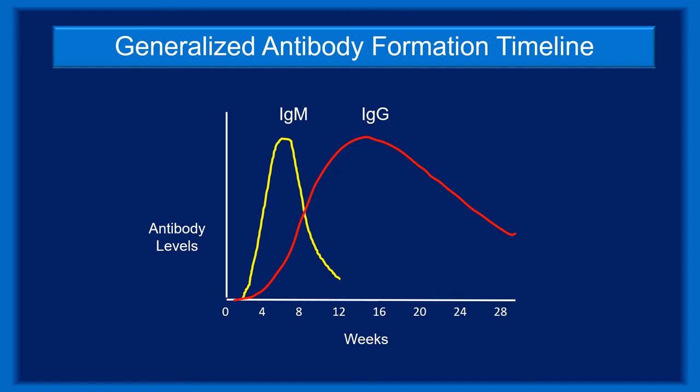IgM antibodies are the first to appear, typically beginning at two weeks, peaking around six weeks, and then rapidly disappearing. IgG antibodies have a slower startup and peak later. IgG levels may be measurable for prolonged periods, and it is IgG antibodies that are involved in immune memory.